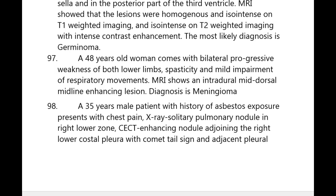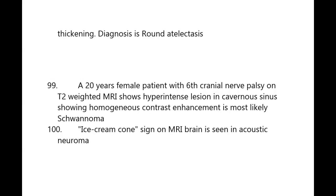A 35-year-old male with history of asbestos exposure presents with chest pain; X-ray shows a solitary pulmonary nodule in the right lower lobe. CT shows an enhancing nodule adjoining the right lower costal pleura with a comet-tail sign and adjacent pleural thickening. Diagnosis is round atelectasis.